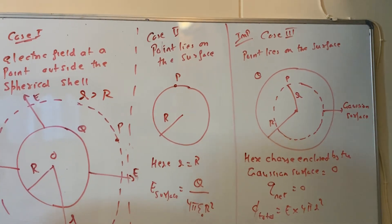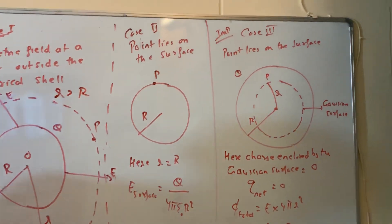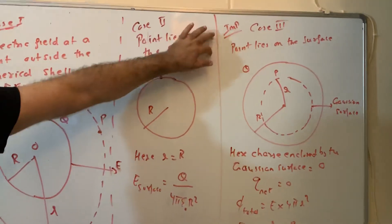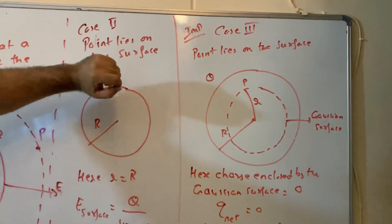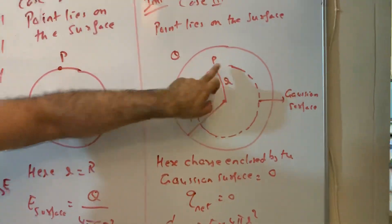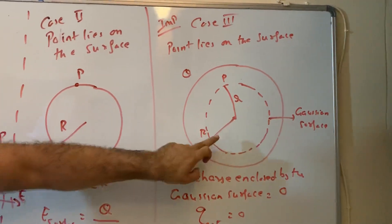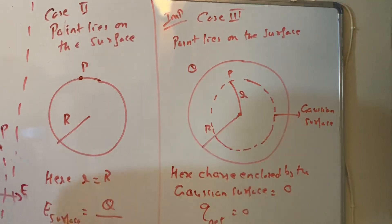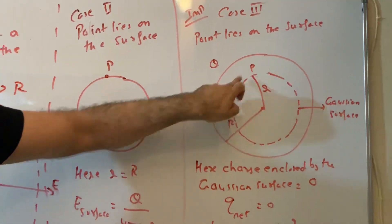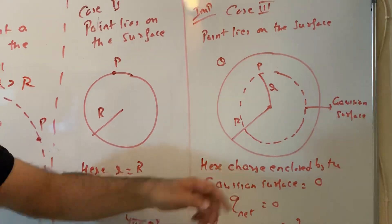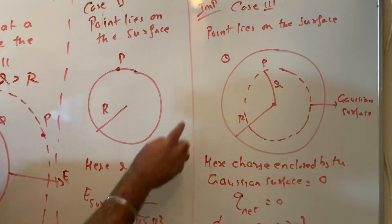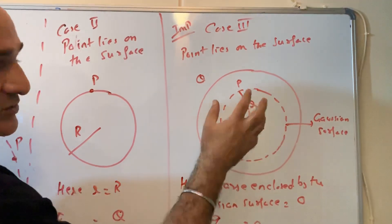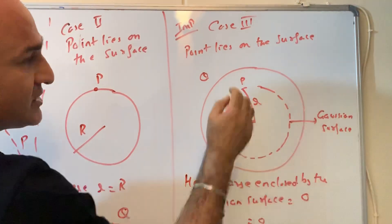For a point lying on the surface, simply substitute r = R in the previous formula: E surface = Q / (4πε₀R²). Now the most important case — a point lying inside the surface. Draw the Gaussian surface inside the shell. The charge is only on the solid shell surface; inside there is no charge.